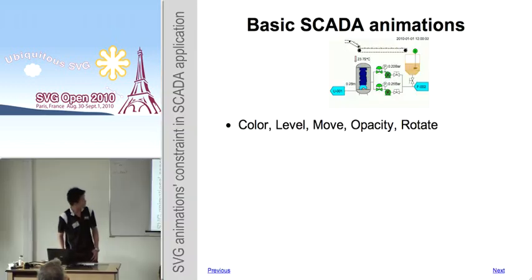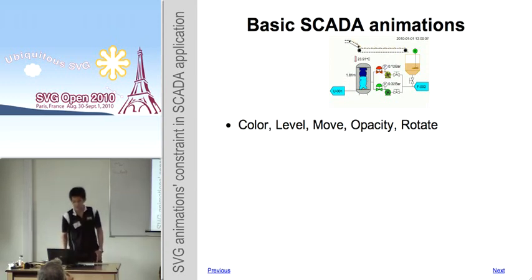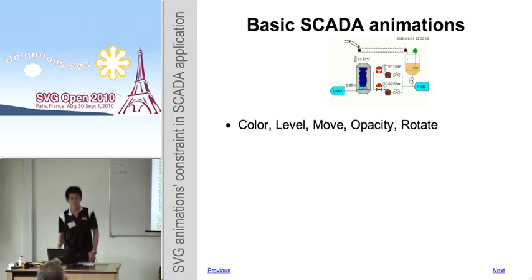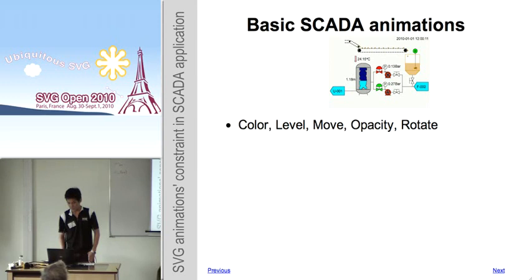This is a basic SCADA screenshot. It consists of details of every connected piece of equipment. For example, this is a pump. Red color stands for stop, green stands for running, and yellow for a problem or warning. This is color animation in SCADA. The water tank shows a level animation, while the text above, displaying temperature, is a text animation.